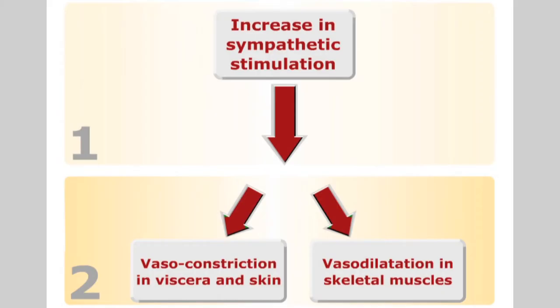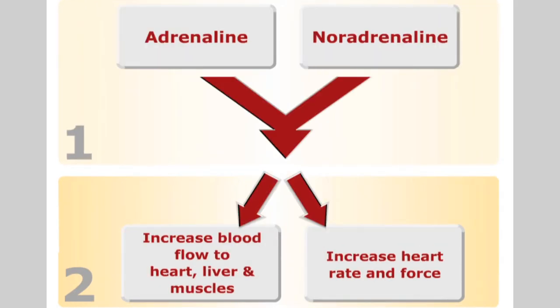Blood pressure and tissue perfusion is influenced by neural and hormonal factors. Sympathetic stimulation causes vasoconstriction, especially in arterioles within the viscera and the skin. In contrast, sympathetic stimulation causes vasodilatation within skeletal muscles. Adrenaline and noradrenaline cause increased blood flow to the heart, liver and muscles. These hormones also influence heart rate and force.